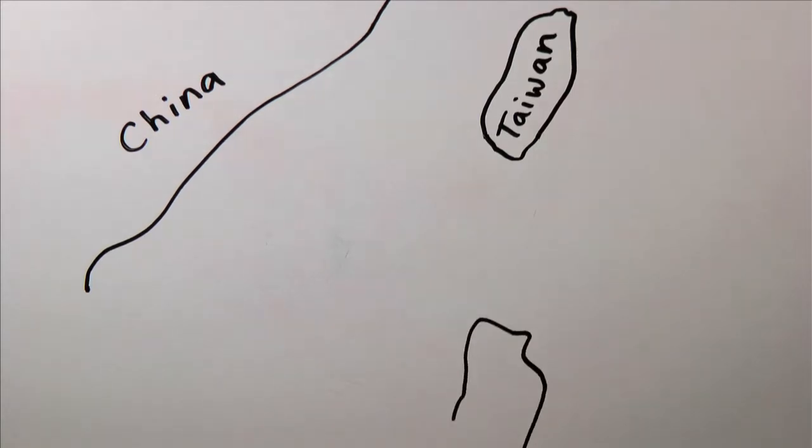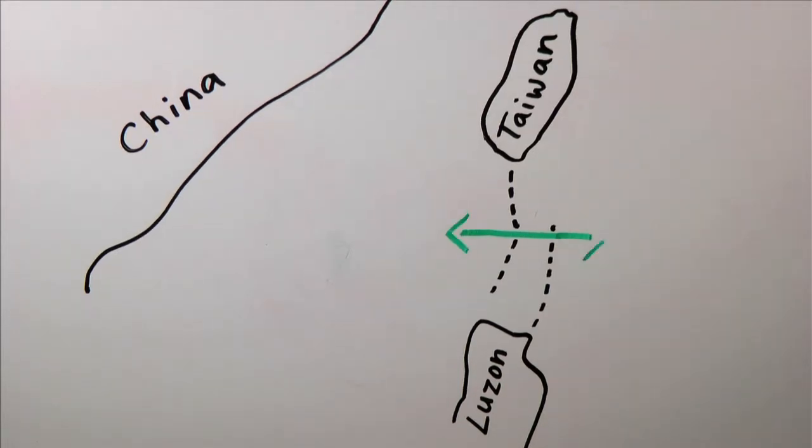So here we have the mainland Chinese coast, and then Taiwan, and down here the Philippines, Luzon. Beneath the surface there are ridges, like mountain ridges. Now when this strong tidal current, I'll represent it here with this arrow first in one direction and then in the other, moves this water, it generates these large waves between the warm and the cold water.